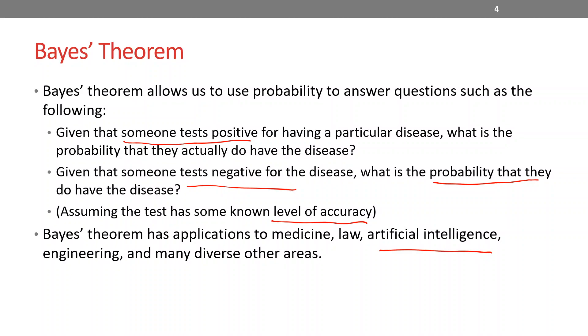Engineering and other diverse areas. Another common problem that we solve using Bayesian classifiers or Bayes theorem is spam or ham. Given an email that has a particular set of words, for example, if an email comes and it has, let's say, a word free in it, can you predict whether it's a spam or not. So that's another application where we use Bayesian classifiers. So these were some examples.